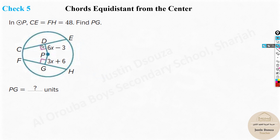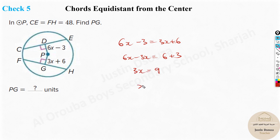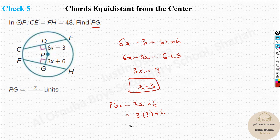For the next problem, CE and FH are equal chords, both equal to 48. Since the chords are equal, their distances from the center must be equidistant, so equate: 6x − 3 = 3x + 6. Solving: 3x = 9, x = 3. Now find PG: PG = 3x + 6 = 3(3) + 6 = 9 + 6 = 15 units.